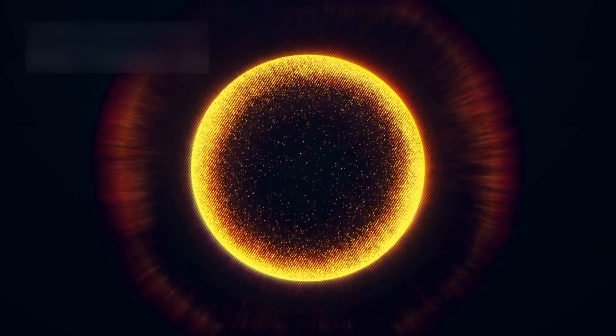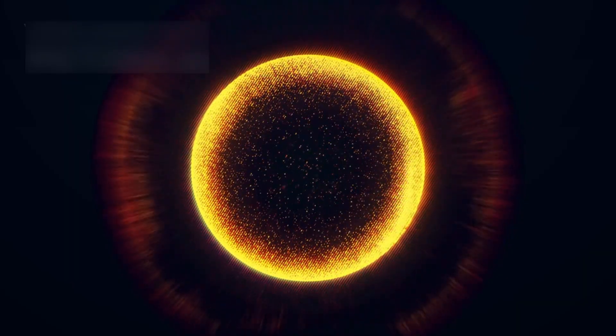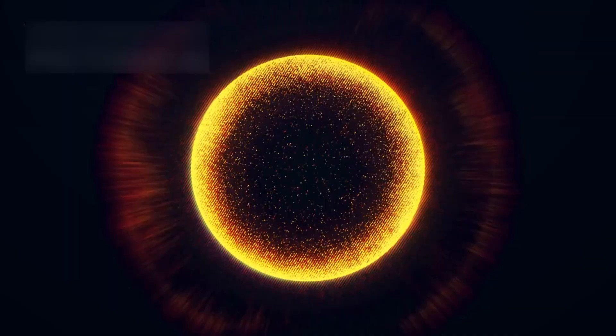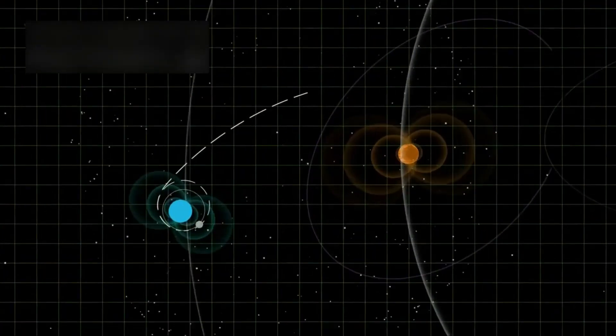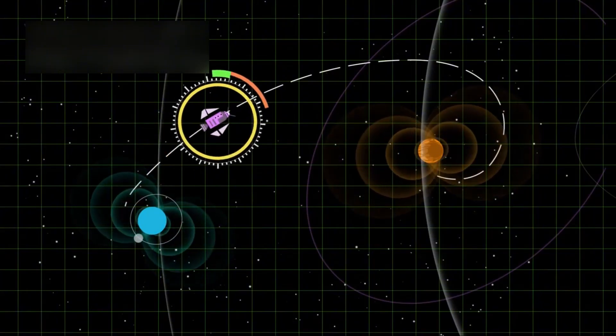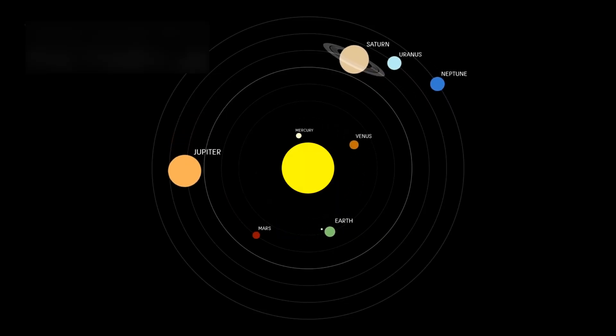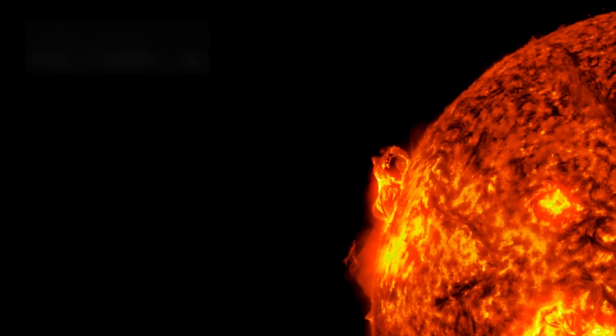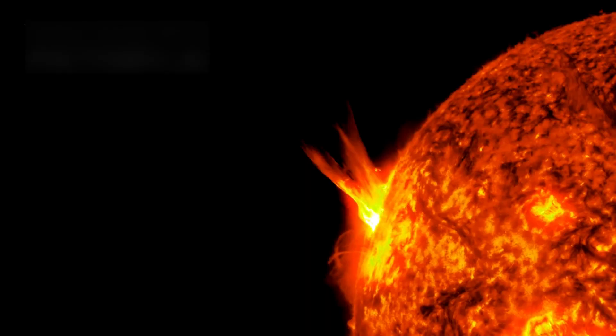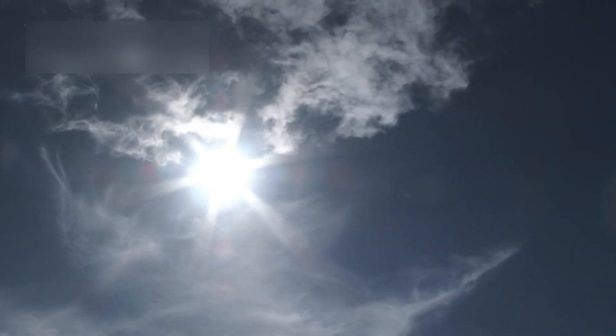Because of its unique position, Voyager 1 has helped scientists learn how interstellar winds interact with the sun's energy. The area where our solar system ends and interstellar space begins isn't fixed. It expands and contracts depending on the sun's 11-year activity cycle. When the sun is more active, the boundary pushes outward. When it's quieter, space pushes back in.